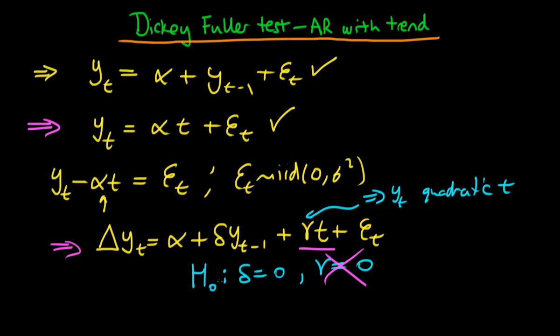So the null hypothesis here again is that delta equals zero against the alternative which is delta is less than zero.